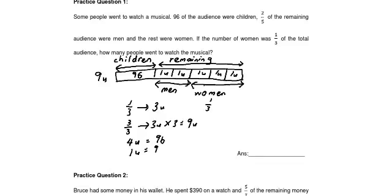Nine units minus five units for adults equals four units for children. So four units equals 96, and one unit equals 96 divided by 4, which gives you 24. How many people went to watch the musical? Total is nine units, so nine units equals 24 multiplied by nine.